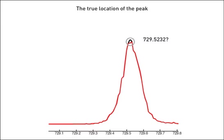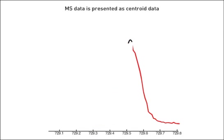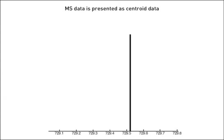Once the peak location is determined, the data is then shifted along the x-axis to its theoretical calibration location. In most instances, the profile data is then discarded along with any information it may contain, and the peak position is marked with the classic MS stick or centroid data.